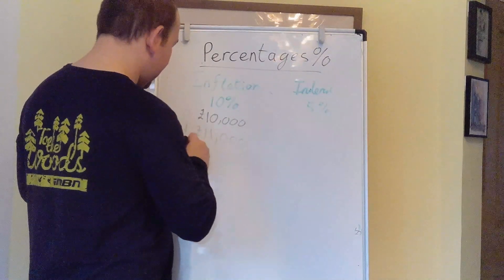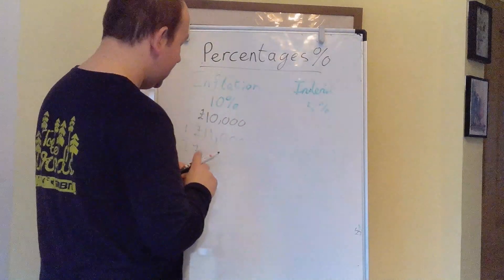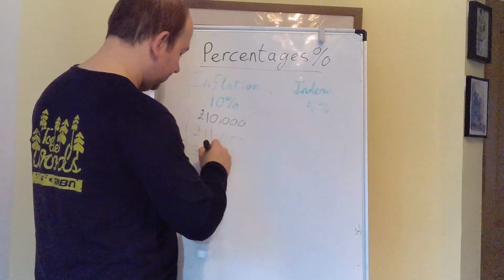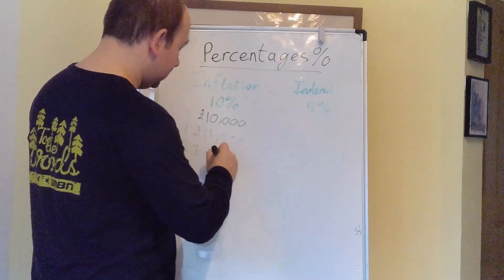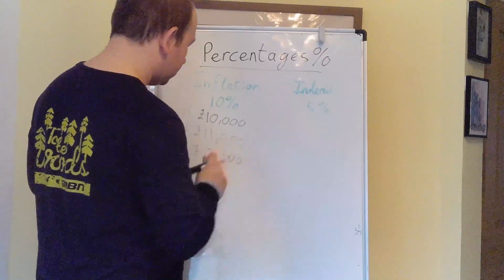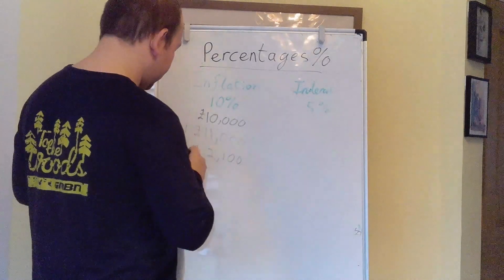After two years, it's going to go up by another 10%. So after two years, you're going to need £12,100 to buy your 10,000 Mars bars.